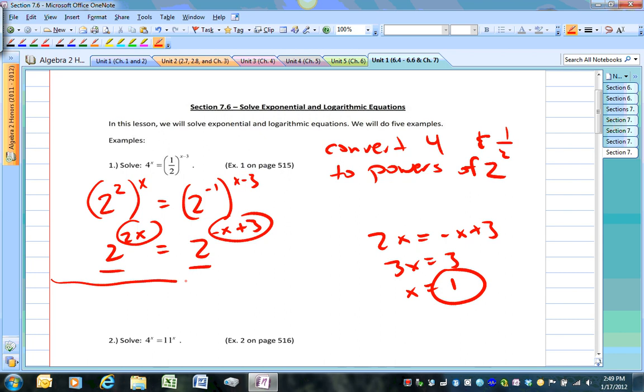We should also check our work. So if you check it really quick, you have 4 to the 1 power equals 1 half raised to the 1 minus 3 power. So 4 equals 1 half to negative 2. Of course, you flip over the 1 half, you get 2 squared, 4 equals 4, so it's all good.